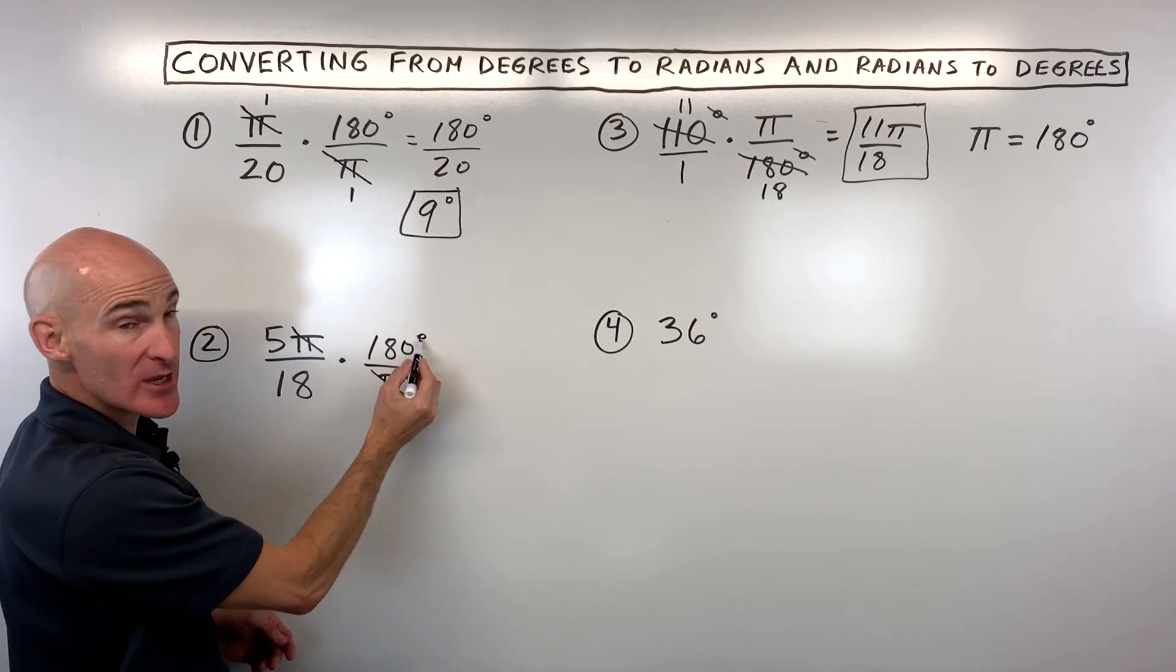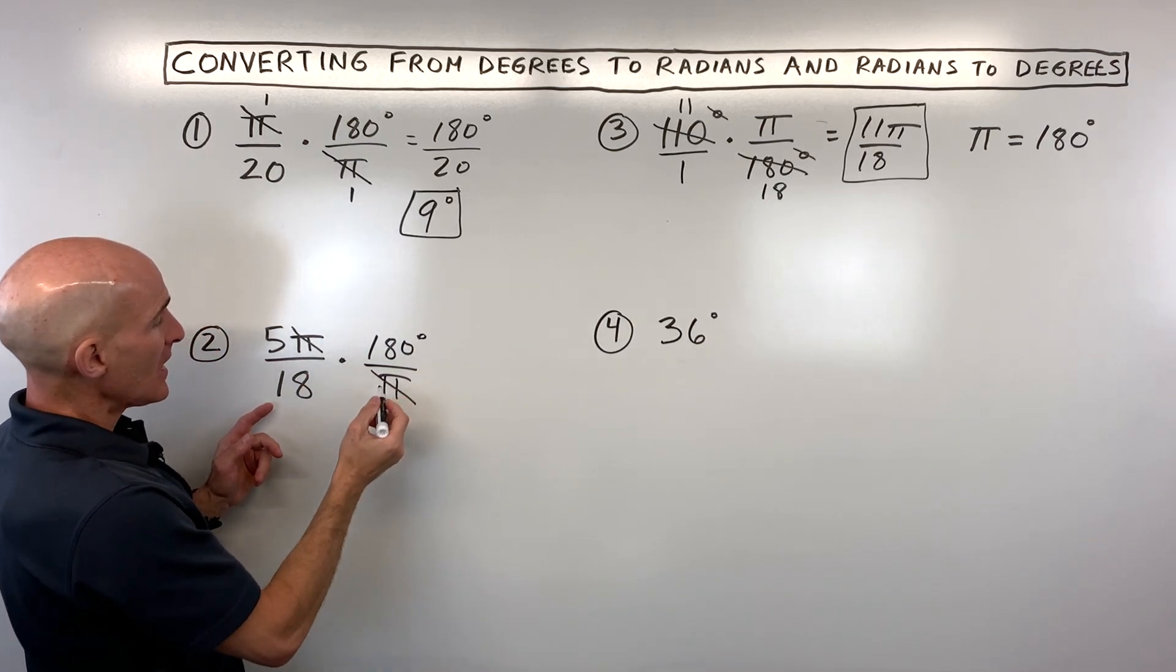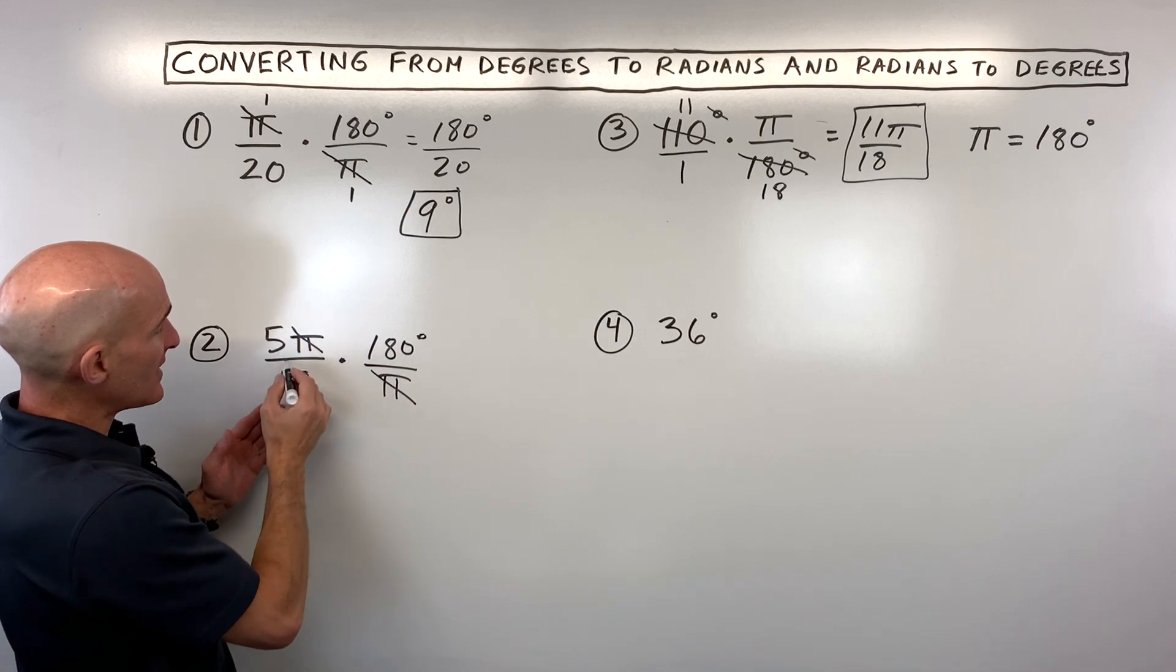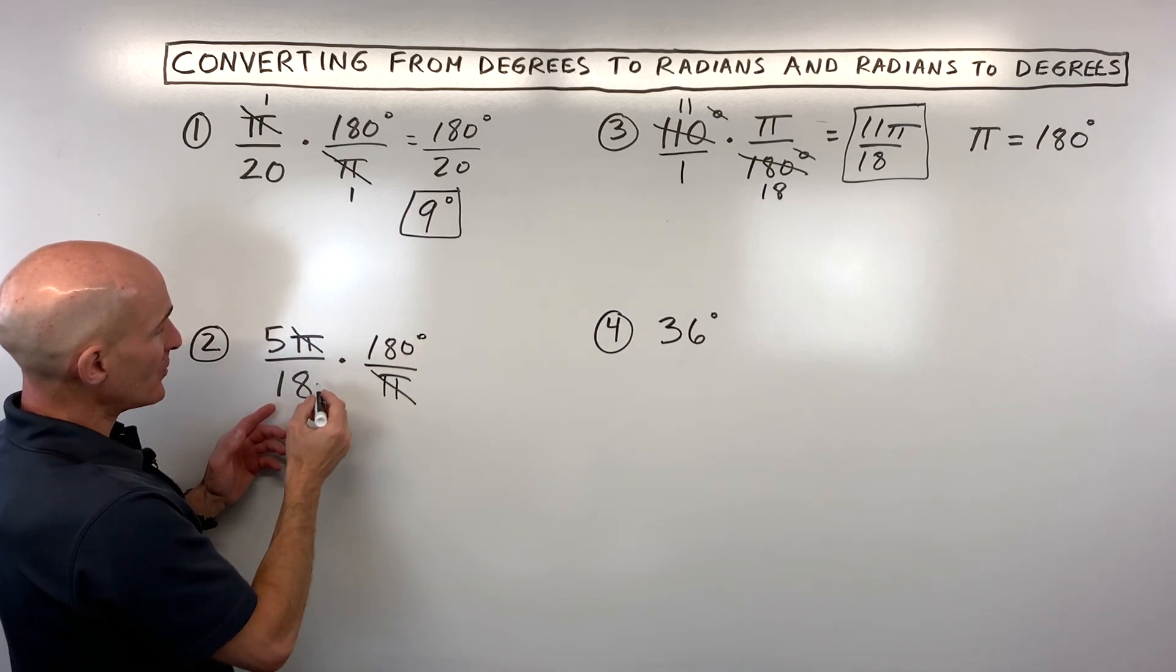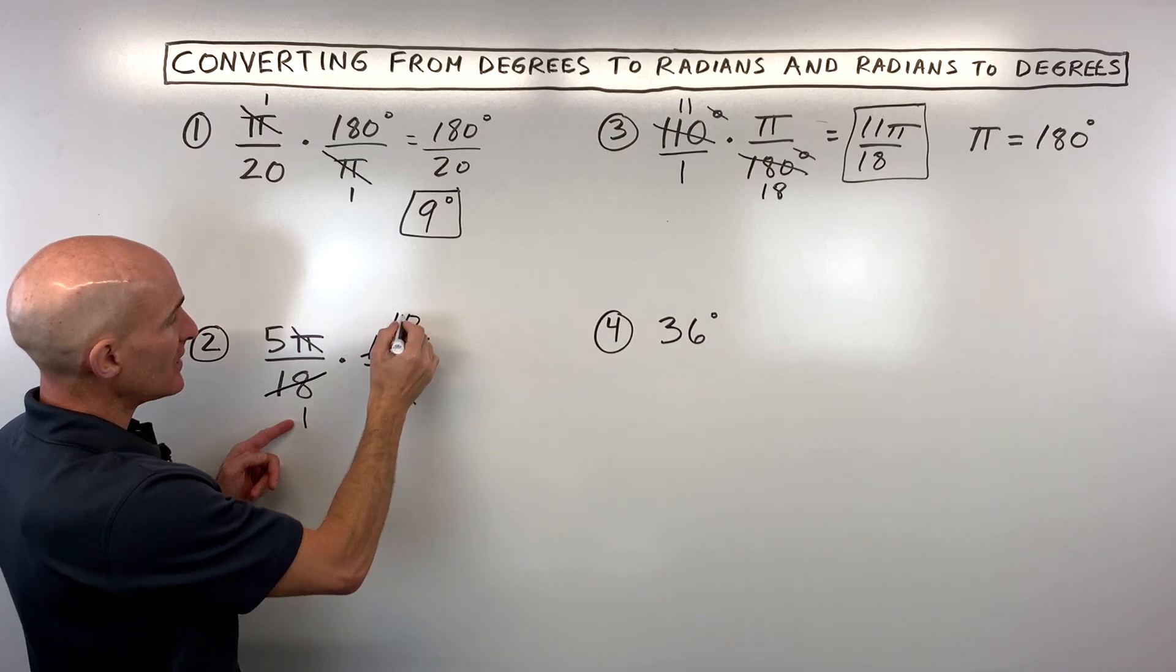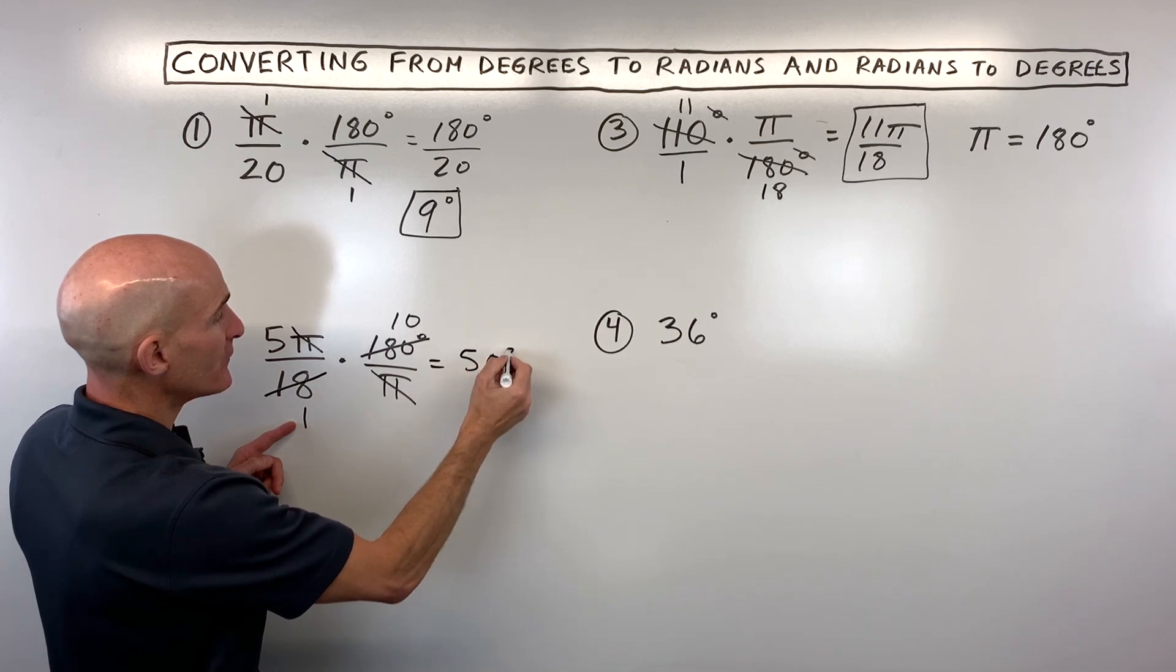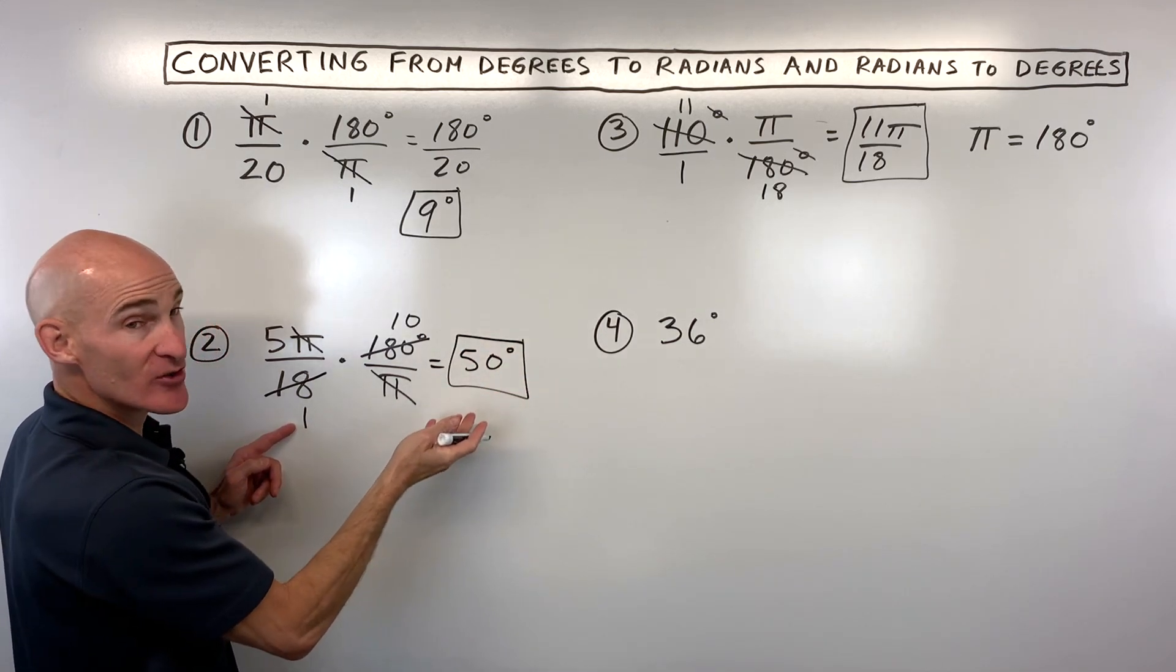And we're left with the units which we want, which are the degrees. So it's kind of like a dimensional analysis or unit conversions. Now you can do some more reducing top and bottom or on the diagonals. So here I can see that 18 goes in here once. 18 goes in here 10 times. And then when I multiply across, 5 times 10 is 50 degrees. And you got it.